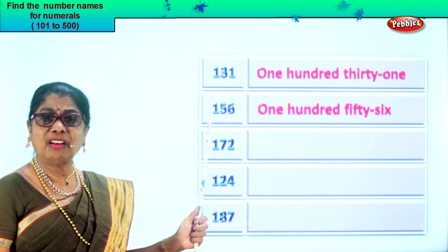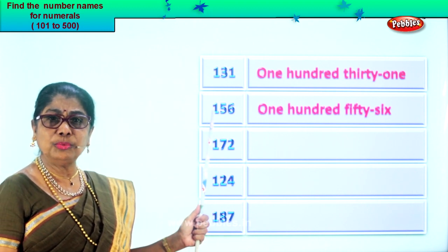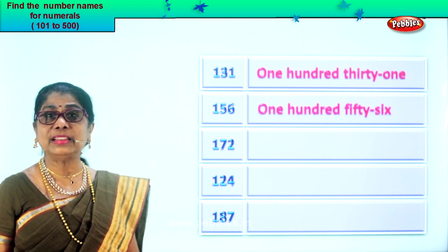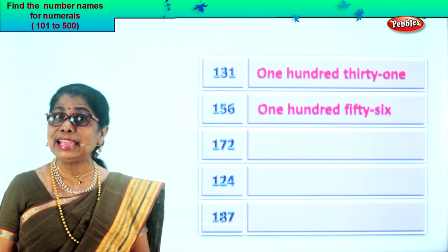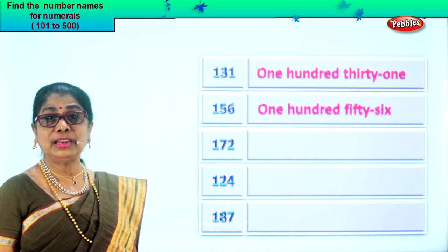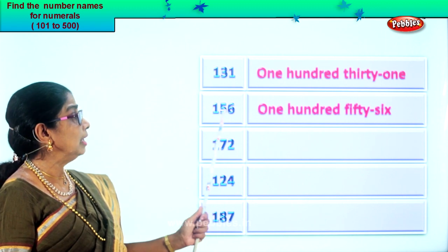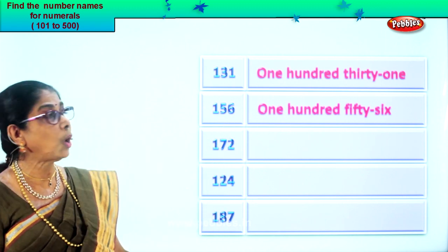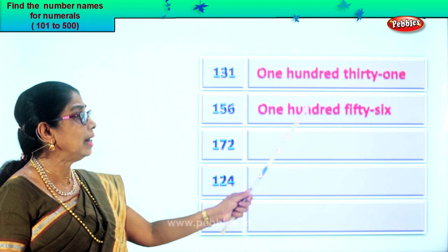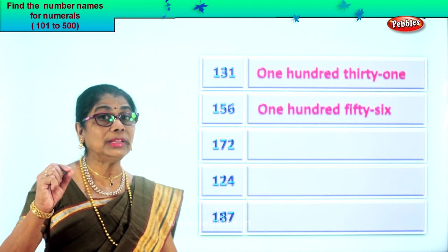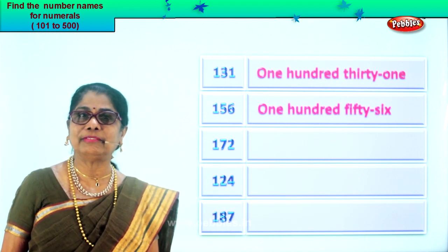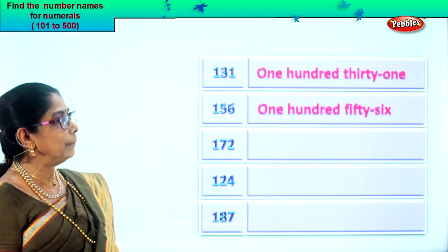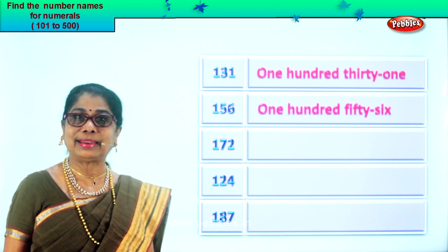What you read on the numeral, just write it, because you already know the spelling of the name of the numeral. You know hundred, you know fifty, you know six. Read again: one hundred fifty-six. The only thing is the spelling should be correct. When you write fifty and hundred and all those numbers, the name should be correct.